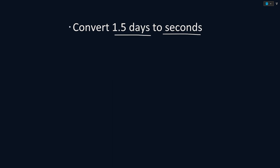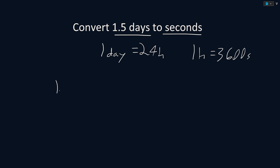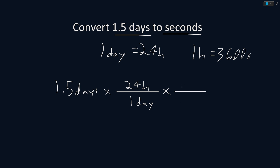Convert 1.5 days to seconds. We know that 1 day is equal to 24 hours, and that 1 hour is equal to 3,600 seconds. So to convert our units, we start with 1.5 days, then multiply by a fraction that cancels out our units. First we convert days to hours by multiplying by hours and putting days on the bottom. Then we convert hours to seconds by multiplying by another fraction, putting seconds on top and hours on the bottom. Solving this, the days cancel and leave us with hours, and then the hours cancel and leave us with seconds.